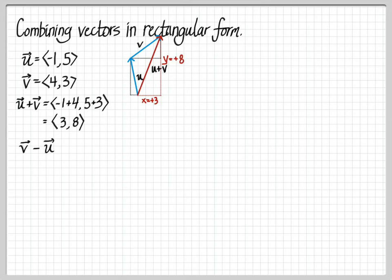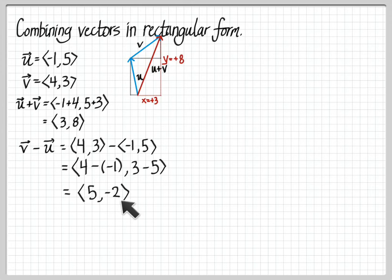Works the same way with subtracting. I'm not going to draw the pictures anymore. In the homework, you'll have to draw pictures for these, but I'm not going to draw them anymore because we want to get through this video. So if I want to do v minus u, so that would be four comma three for v minus negative one comma five, and we simply subtract. We subtract the x components, we subtract the y components. So we'll get four minus negative one for the x component, three minus five for the y component, which is five comma negative two. So v minus u is the vector five comma negative two.